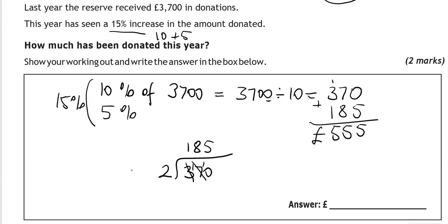So we're going to work out how much has been donated. So that's the total. So we're going to add to this the £3,700. 5 and 0 is 5. 7 and 5 is 12. So £4,255.